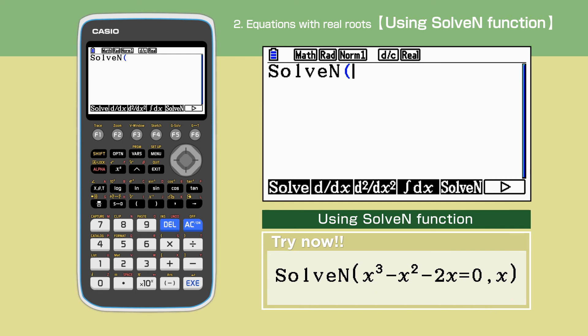In this example, our entry to SolveN will look like SolveN bracket, x cubed minus x squared minus 2x equals 0 comma, x bracket close.